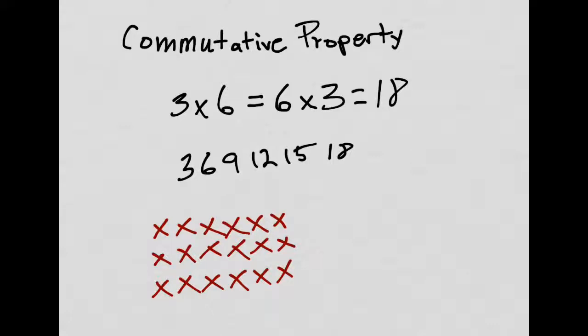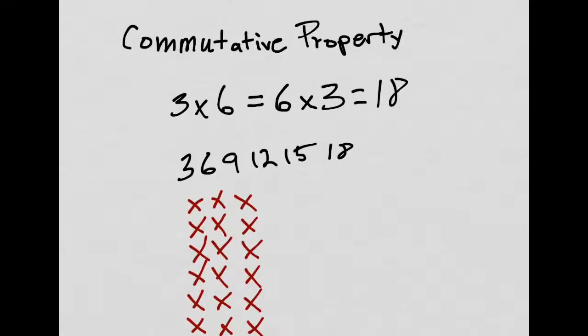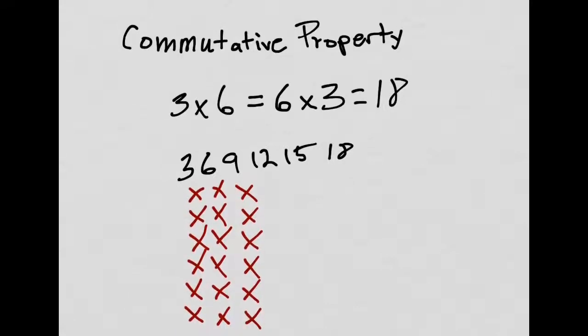The commutative property is simply the idea that if I turn this array, I still have the same total. Now, instead of having 3 groups of 6, 3 times 6, I have 6 groups of 3.